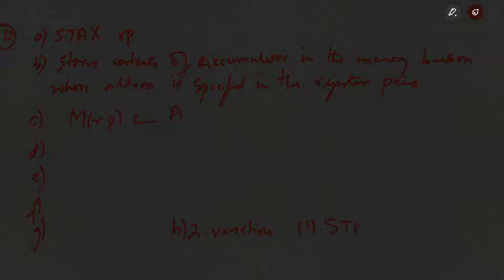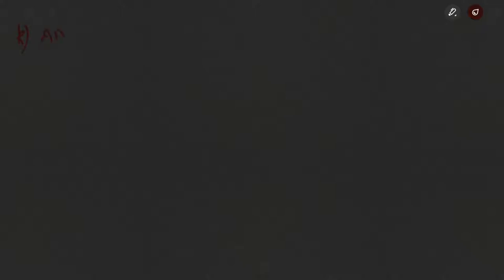The two variations of STAX are: STAX B for the BC register pair and STAX D for the DE register pair. No flag is affected. For the addressing modes: the source is the accumulator, which is implied in the instruction; the destination uses register indirect addressing mode. The machine cycles are the opcode fetch and the memory write machine cycle, in which the contents of the accumulator are written to the memory location.